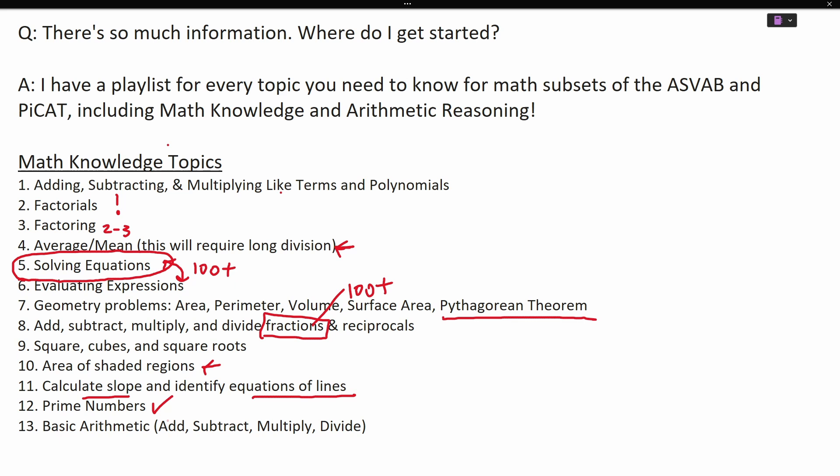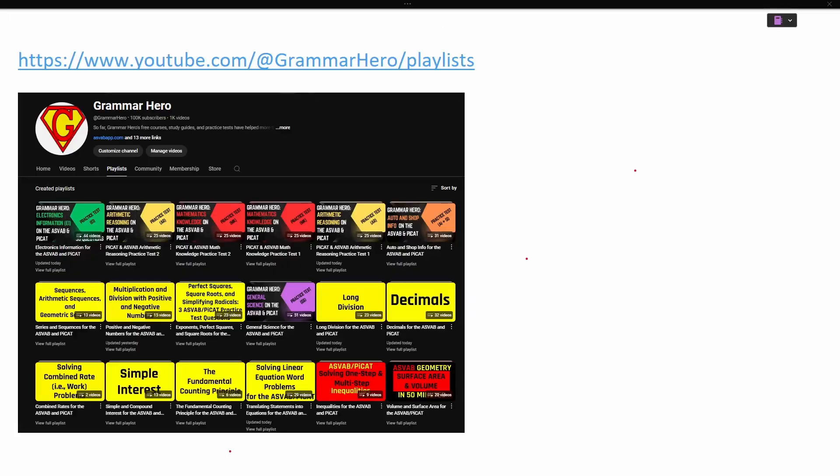You have to understand how prime numbers work, and finally you have to know some basic arithmetic, which means you have to be able to add, subtract, multiply, and divide positive and negative numbers as well as numbers involving decimals.